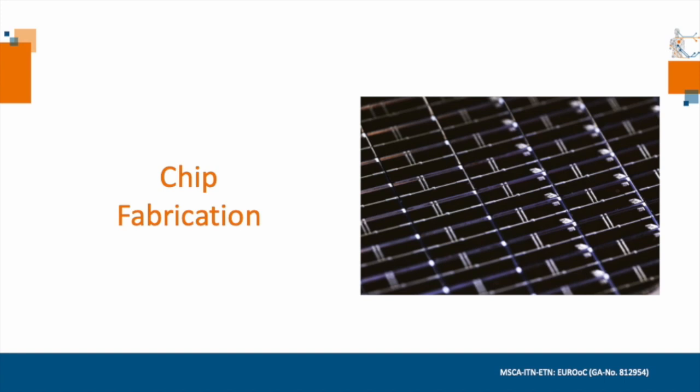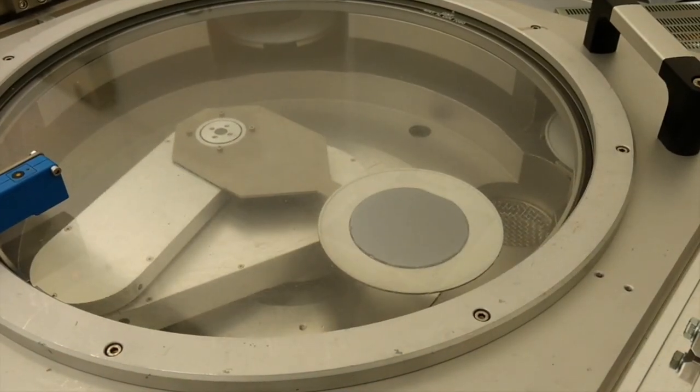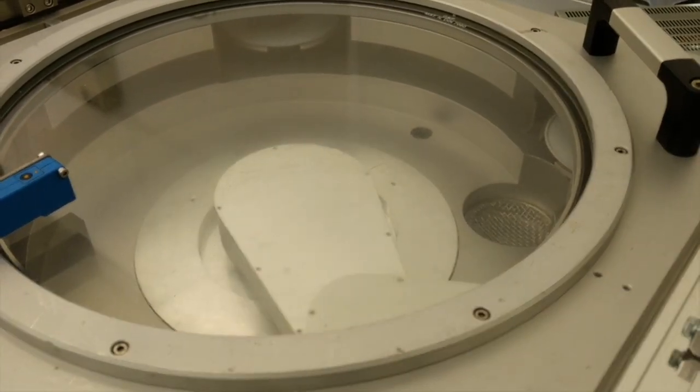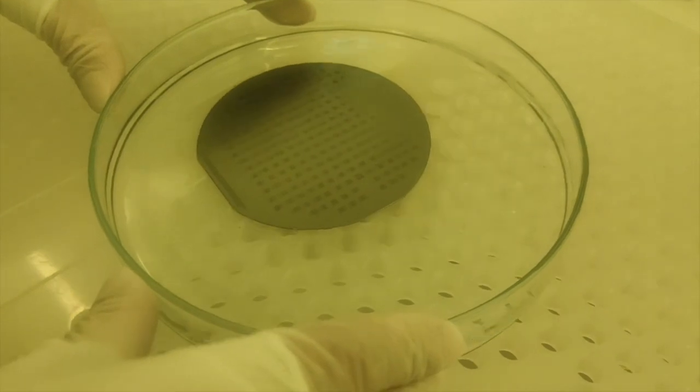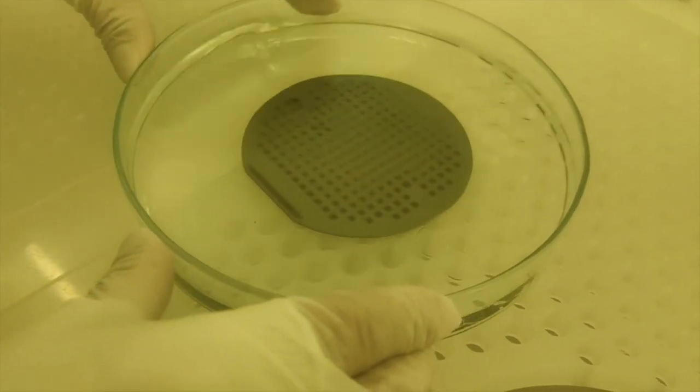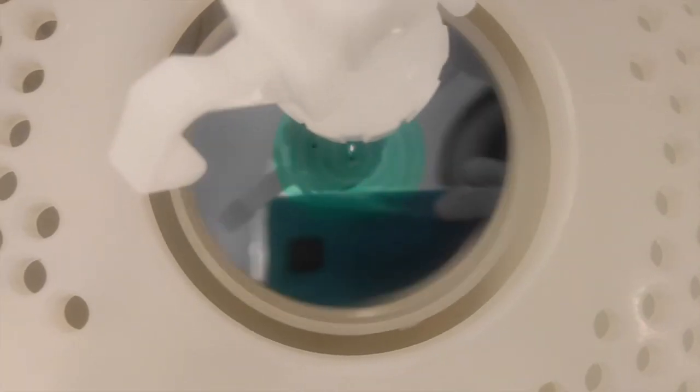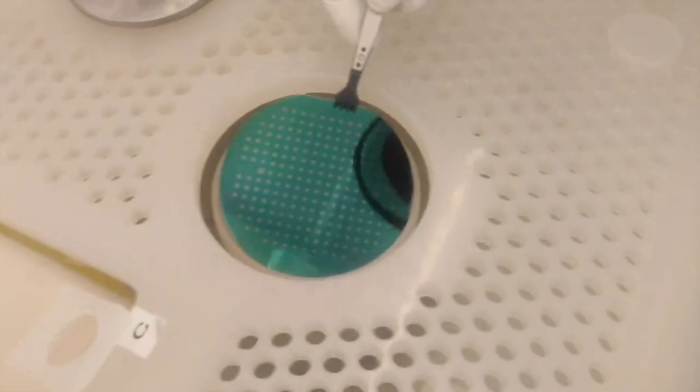To be able to work with the chips, we first have to make them. The fabrication method of the chip depends on the materials that are used, and we will show you a few examples of our methods. To replicate small features, lithography processes are usually used, where the shape of the chip design can be transferred onto our material with a thin film of light-sensitive plastic.